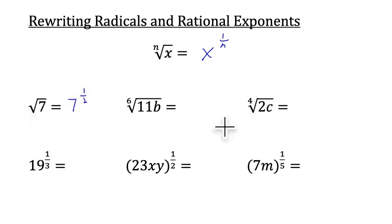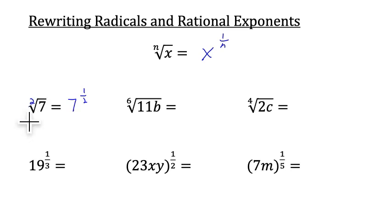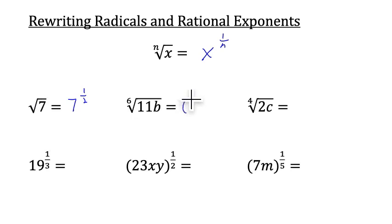We can rewrite the square root of 7 as 7 to the 1 half power. With square roots, they're a little bit different from other roots because they don't have a number above the radical, but we understand there's a 2 there if no number is shown. Here we have the 6th root of 11b, so we'll put 11b in parentheses and raise it to the 1 6th power.